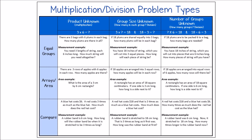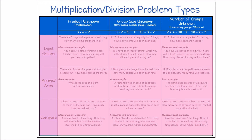The first criterion is the location of the unknown. Are we finding the number of groups, the size of each group, or the total or product? Identifying what we are solving for will help us decide how to solve the problem.